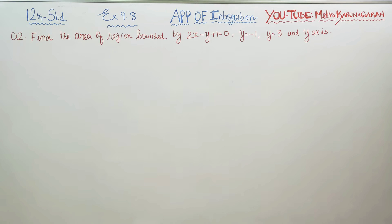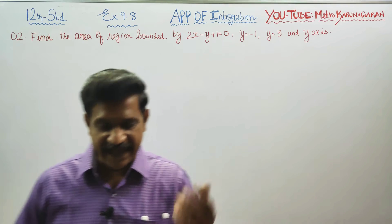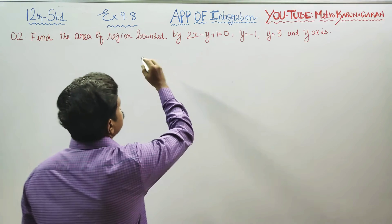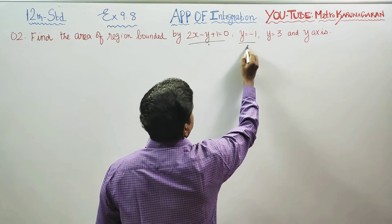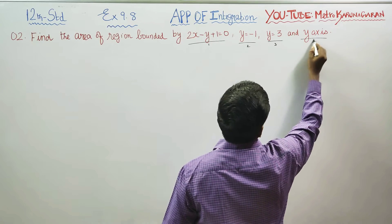Dear 12th standard students, in exercise number 9.8, sum number 2: find the region bounded by 2x minus y plus 1 is equal to 0, y is equal to minus 1, y is equal to 3, and the y-axis. We have 4 boundaries: this is the first boundary, this is the second boundary, this is the third boundary, this is the fourth boundary.